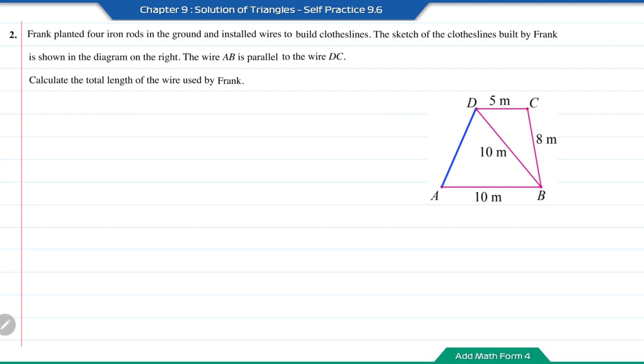So based on the diagram, the only length that we didn't know will be the length AD. And the length AD is opposite to the angle ABD. So if we are able to find what is the angle ABD, then we can solve the length AD by using the cosine rule. So in this question, it stated that DC is parallel to AB. So using the knowledge of the alternate angle, then the angle ABD will be equal to the angle BDC.